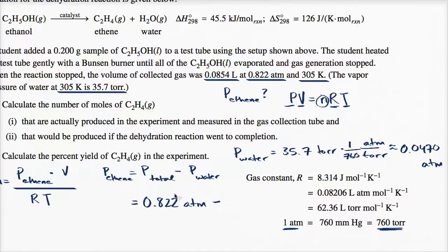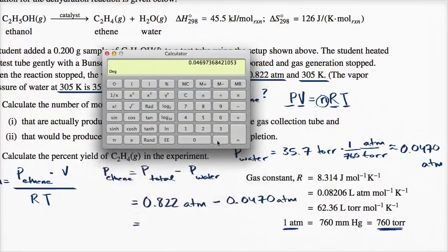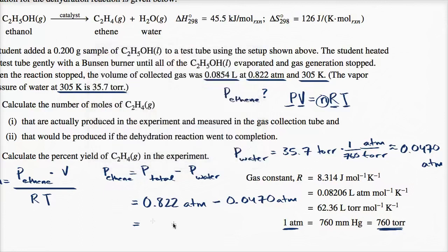So the partial pressure of ethene equals the total pressure of 0.822 atmospheres minus the partial pressure of water of 0.0470 atmospheres, which gives us a partial pressure of ethene of 0.775 atmospheres.